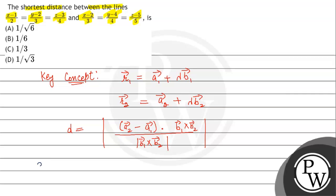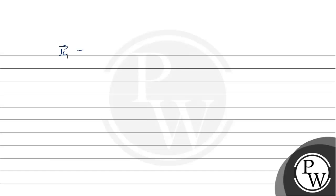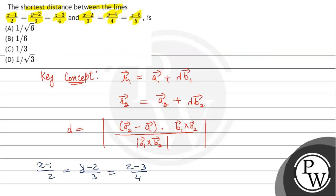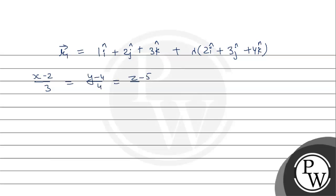First, the equation of the first line is (x-1)/2 = (y-2)/3 = (z-3)/4. We can write this in vector form: R1 vector = (i cap + 2j cap + 3k cap) + λ(2i cap + 3j cap + 4k cap). The second line is (x-2)/3 = (y-4)/4 = (z-5)/5, so R2 vector = (2i cap + 4j cap + 5k cap) + μ(3i cap + 4j cap + 5k cap).